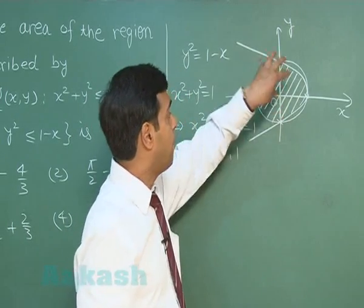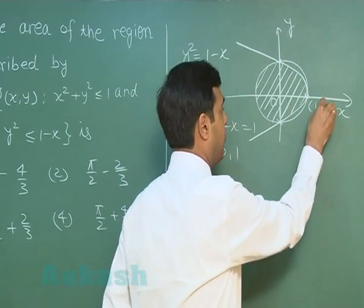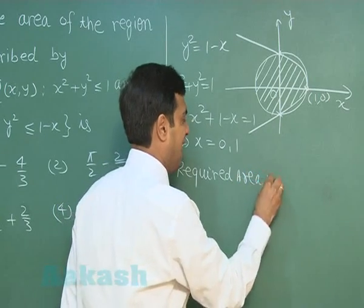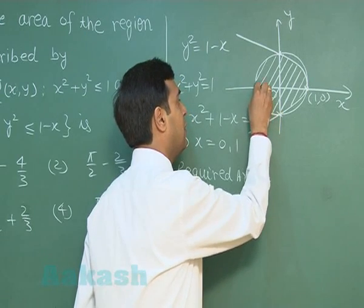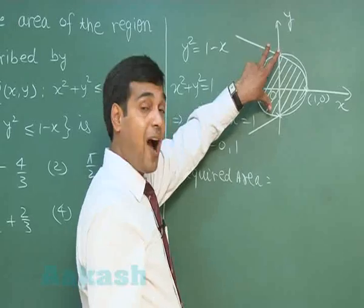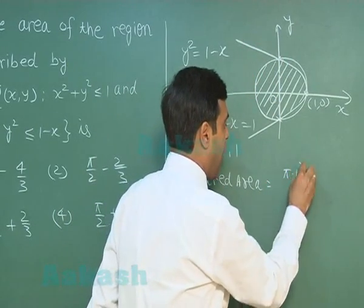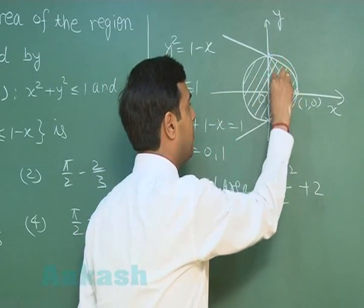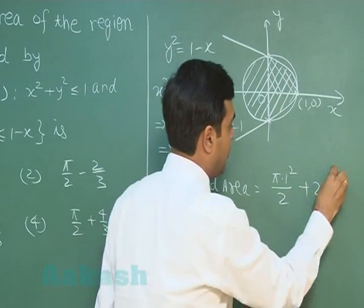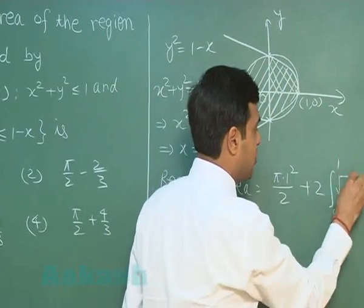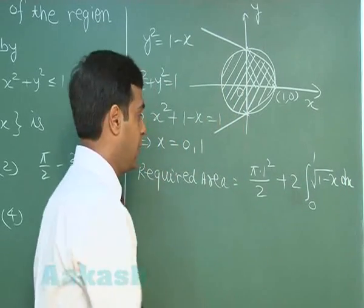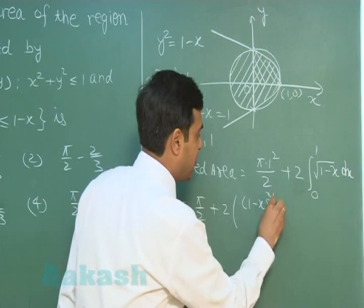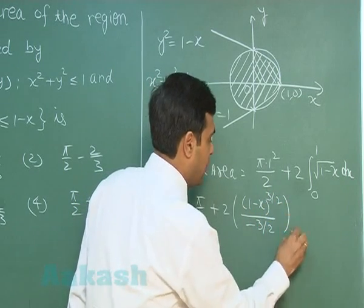We have to find the area bounded by the circle and the parabola. This point is (1, 0). Required area equals the area of the semicircle, which is πr²/2 where r = 1, plus double of the shaded portion: twice the integral from 0 to 1 of √(1 - x) dx.